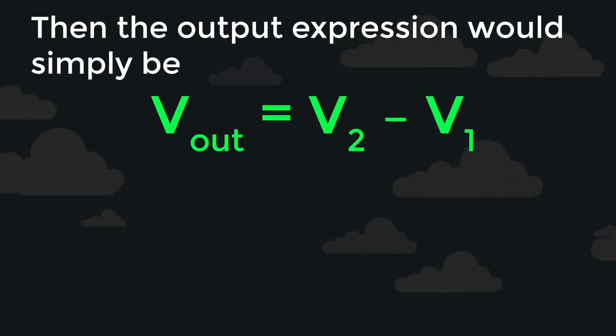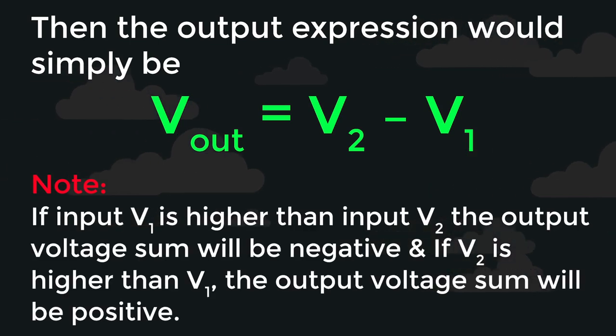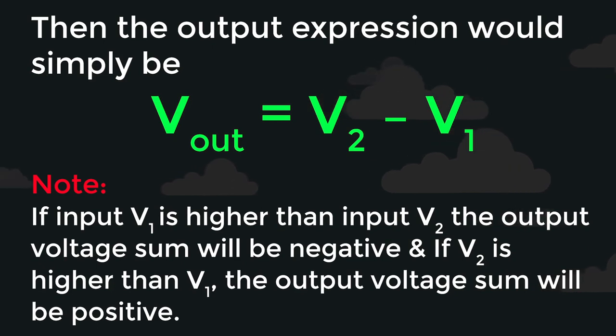Then the output expression would simply be Vout equals V2 minus V1. Note: if input V1 is higher than input V2, the output voltage sum will be negative, and if V2 is higher than V1, the output voltage sum will be positive.